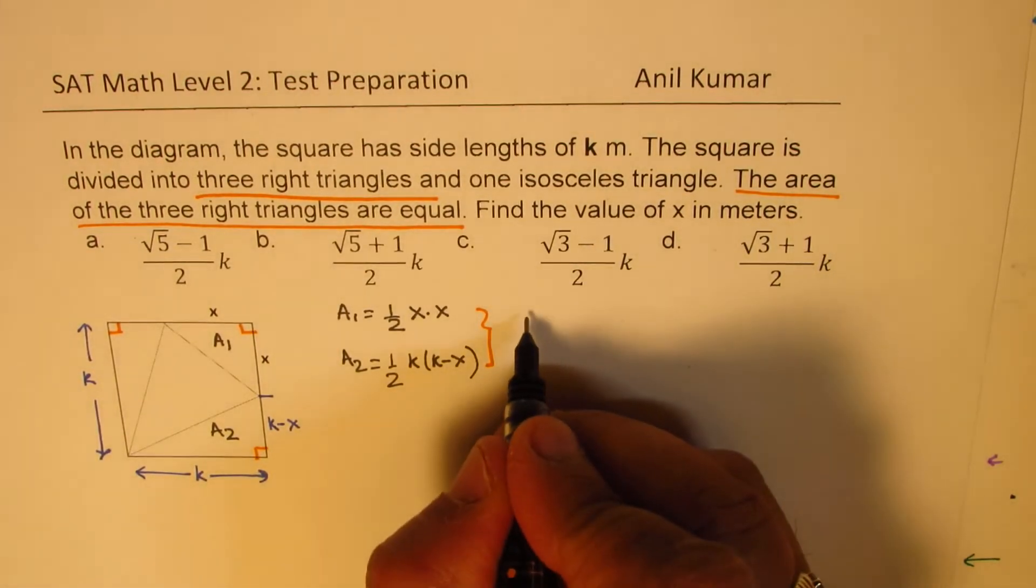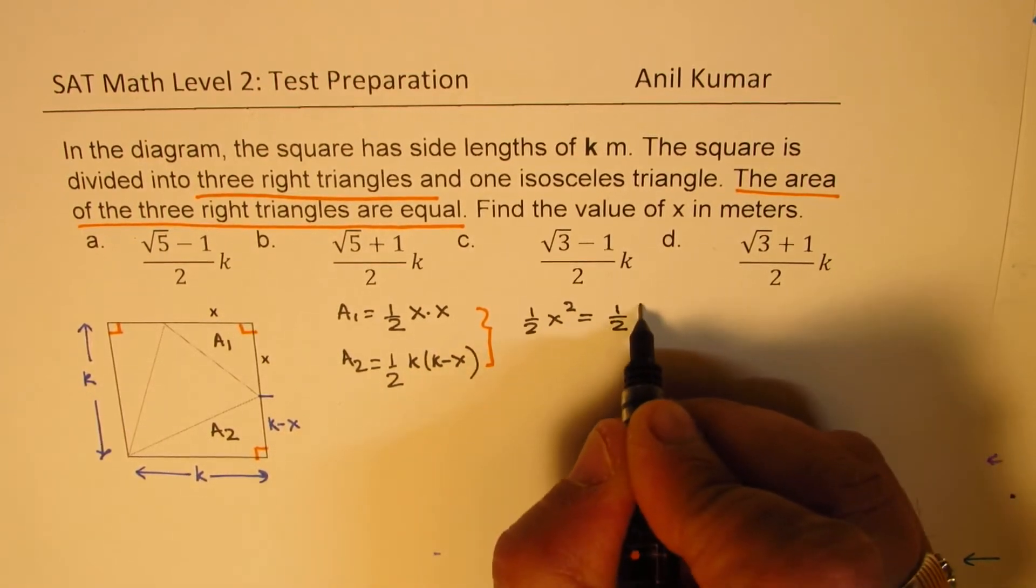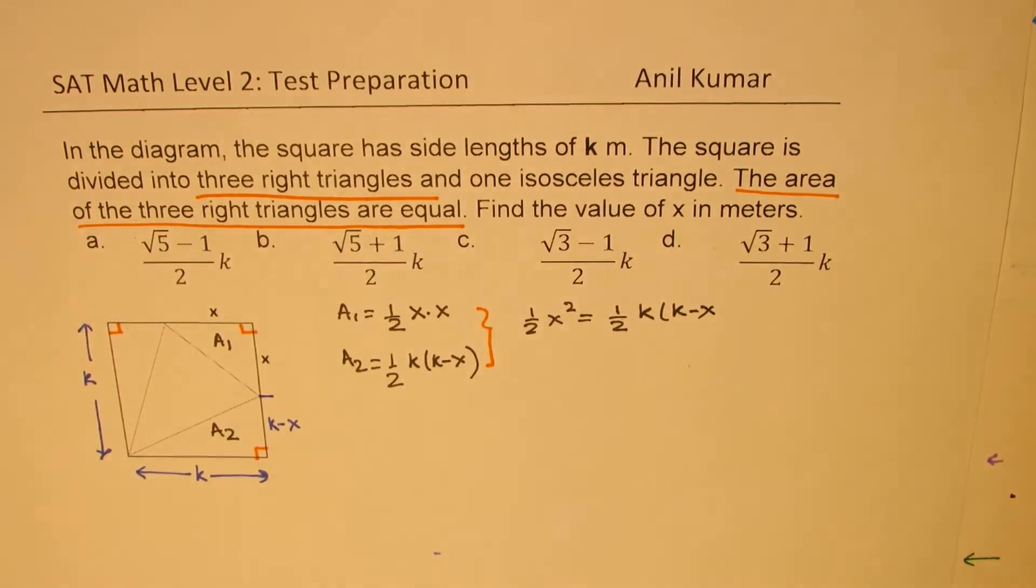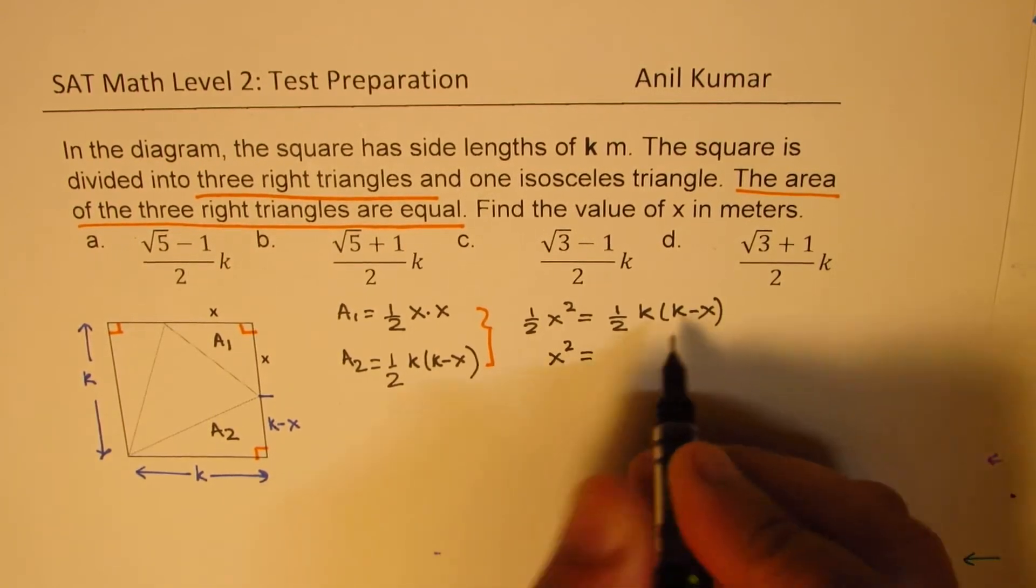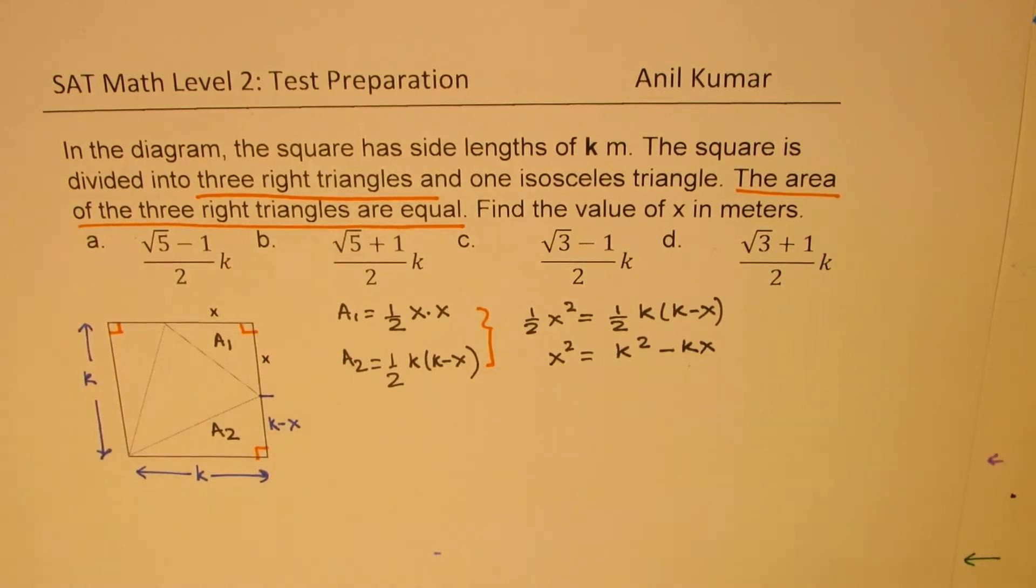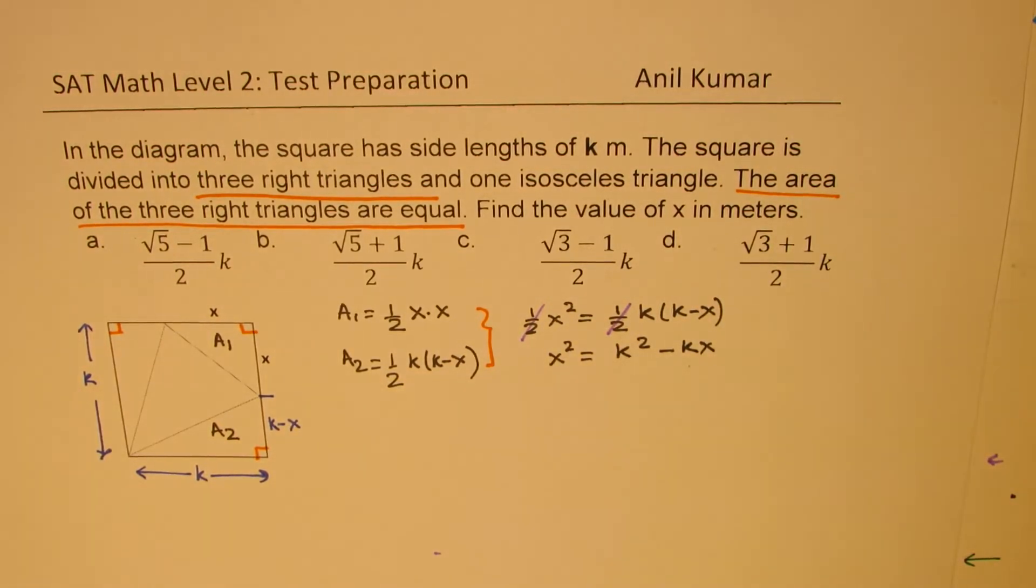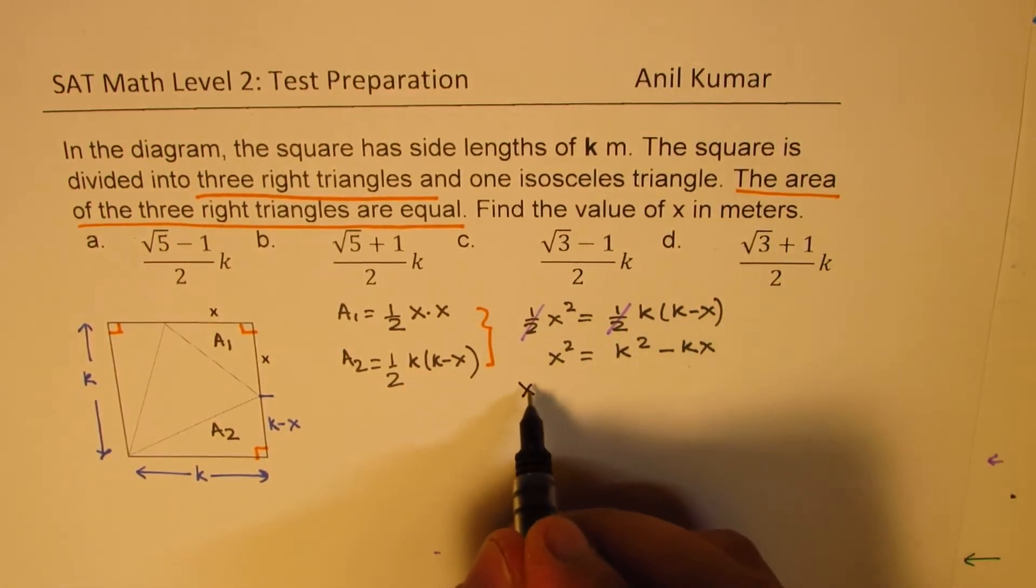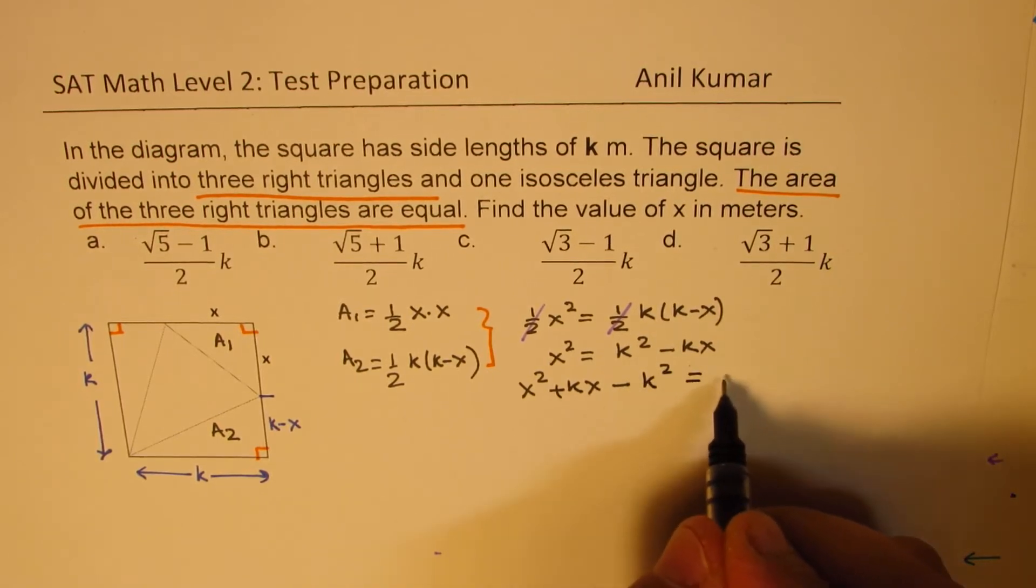So equating, we get half x square equals to half of k times k minus x. So half and half cancels, right? So you could now write this as x square equals to k square minus kx, correct? So basically we just cancel half and then equate it. We got a quadratic equation. So this quadratic equation is x square plus kx minus k square equals to 0.